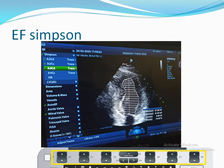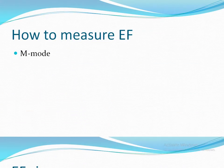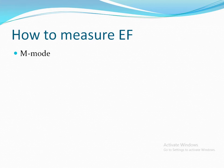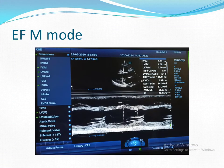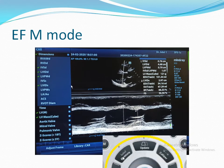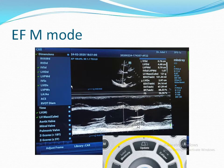How to measure Ejection Fraction by M-mode: after you obtain your M-mode image, press Measure. We will start from the interventricular septum in diastole — measure the septum, then measure the posterior wall. After that, choose the systolic frame and measure the septum and posterior wall in systole as well.